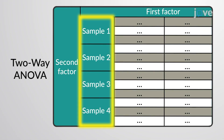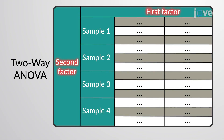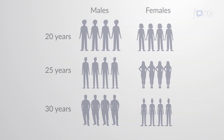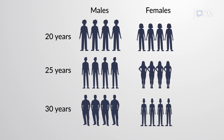A two-way ANOVA compares three or more sample means categorized by two factors. Consider comparing the height of males and females from three age groups.